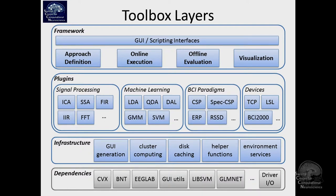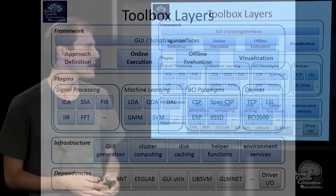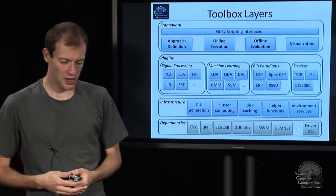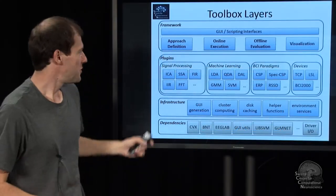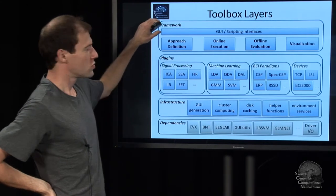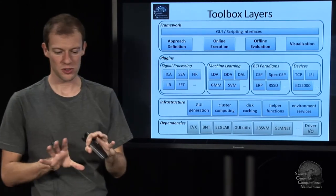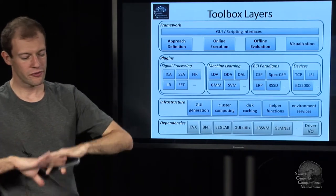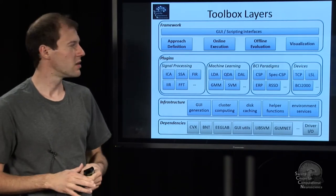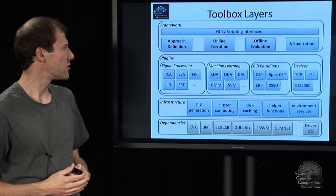This is where you define that. Then there is ways to execute models online, basically run them online, and ways to evaluate how well they work offline, and obviously also some visualization. And all these features are accessible through scripts and through a GUI. And the two cover primarily very much overlapping features. So you can do the same with both interfaces.